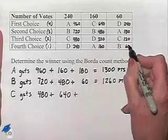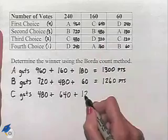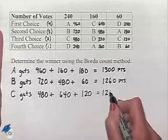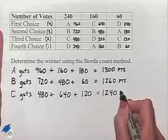And in the last column, 120 points. That gives us a total of 1,240 points.